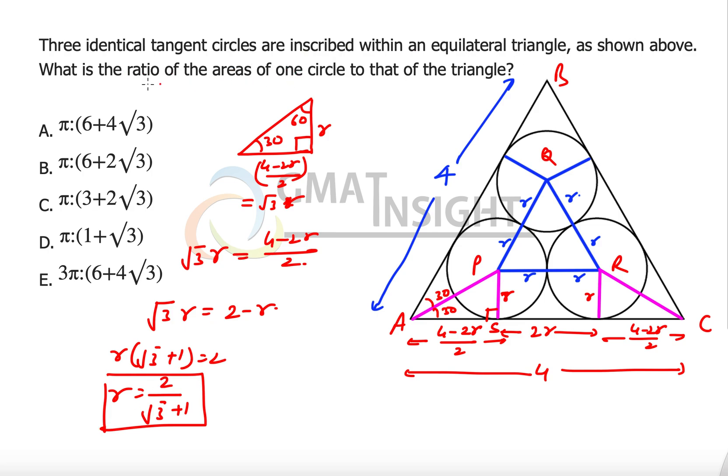Now that we have the radius we can quickly find out what the question is asking. The ratio of area of one circle to that of the triangle: the circle has area pi r squared which means pi times 2 over root 3 plus 1 squared, divided by the area of the triangle, and area of the triangle will be root 3 divided by 4 of side squared.